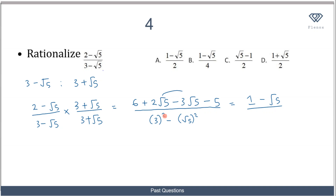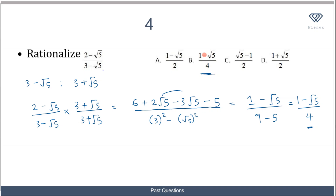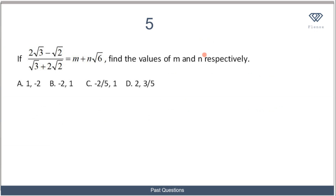Collecting like terms in the numerator: 6 minus 5 gives 1, and 2 root 5 minus 3 root 5 gives minus root 5. The denominator is 9 minus 5 equals 4. So the result is (1 minus root 5) over 4. The answer is B.